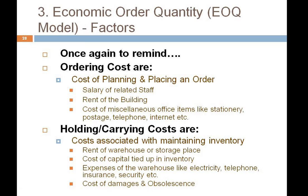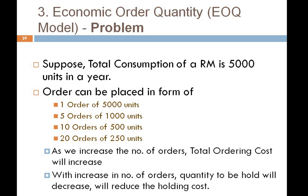There is also the cost of damages and obsolescence of raw materials stored in warehouses. For example, if the total consumption of a raw material is 5000 units in a year, we could place one order of 5000 units, or 5 orders of 1000 units each, or 10 orders of 500 units, or 20 orders of 250 units. As we increase the number of orders, the total ordering cost increases.